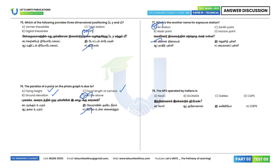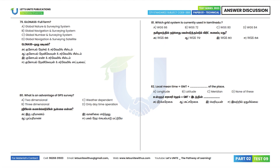Question 78: GPS operated by Indians — the correct answer is NavIC. Question 79: What is the full form of GLONASS? The answer is Global Navigation and Surveying System. Option B. GLONASS was developed in Soviet Union, actually Russia.